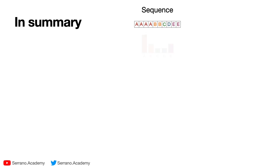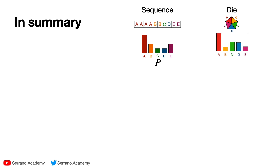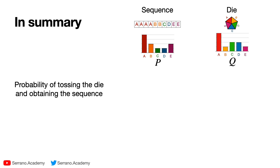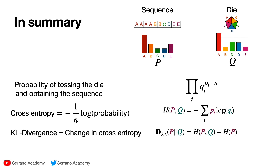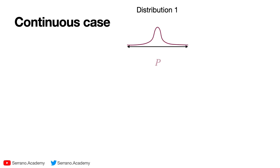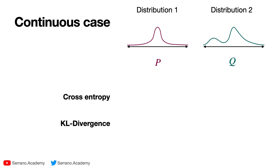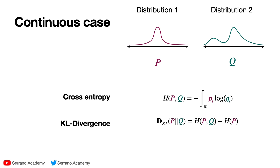Here's a summary of formulas. We have the distribution P for the sequence and Q for the die probabilities. The probability of tossing the die and obtaining the sequence is the product of q_i to the p_i·n. The cross entropy is the logarithm of this probability times -1/n — the minus makes it positive and the 1/n scales it — giving the formula: negative sum of p_i·log(q_i). The KL divergence is the cross entropy H(P,Q) minus the entropy H(P). We did this in the discrete case, but for two continuous distributions P and Q, the cross entropy uses an integral instead of a summation, and the KL divergence is still the difference between cross entropy and entropy.